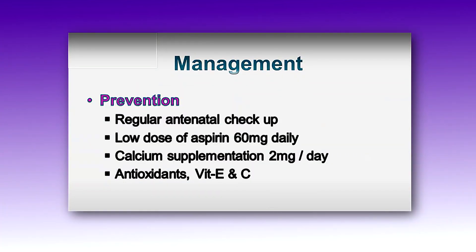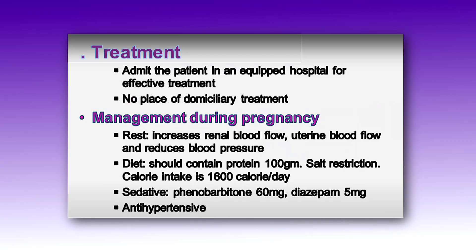Now I will explain the management of preeclampsia. Prevention is better than cure. Preventive aspects include: regular antenatal checkups, low-dose aspirin 60 mg daily, calcium supplementation 2 g per day, and antioxidants like vitamin E and C. In case of severe hypertensive disorder, we should never try to conduct labor at home — admit the mother in a well-equipped hospital. She should also take proper rest, which increases renal blood flow, uterine blood flow, and reduces blood pressure.